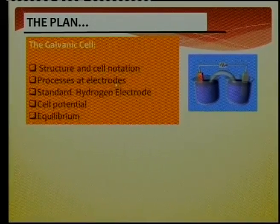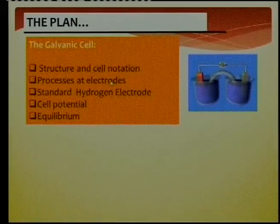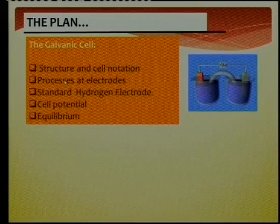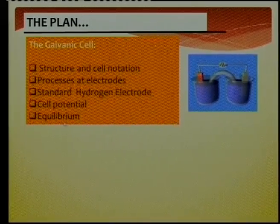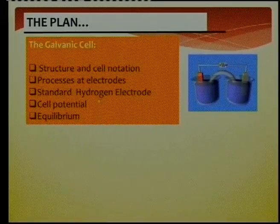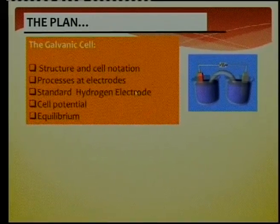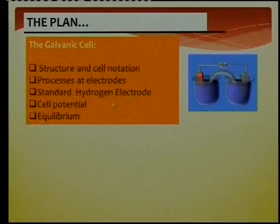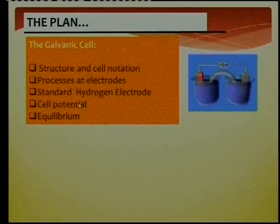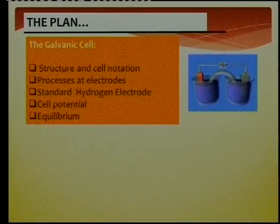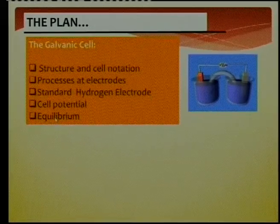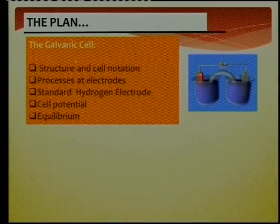We look at the two electrodes — the anode and the cathode — and which processes take place there: oxidation and reduction. Then we'll meet the standard hydrogen electrode, which is the standard of zero volts, and we'll see how we apply it. Then we'll make a calculation of the cell potential of any two half cells, and lastly we'll be talking about equilibrium in the galvanic cell.